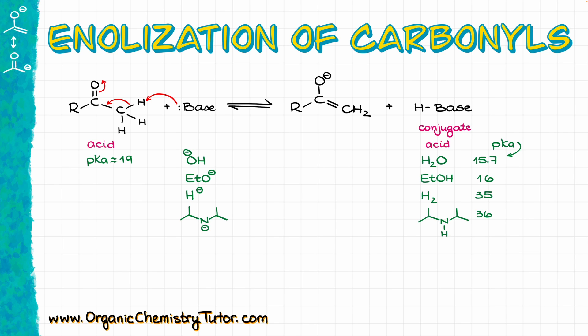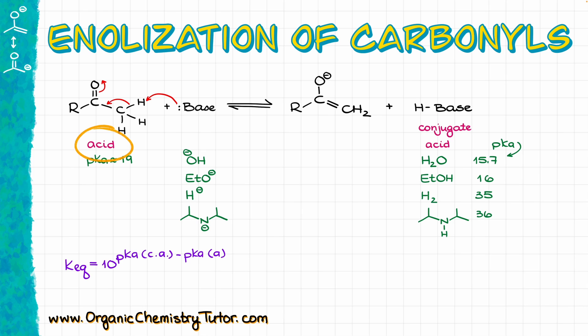That is extremely important because if we were to calculate the equilibrium constant of this acid-base reaction using our shortcut — where the equilibrium constant is going to be the pKa value of the conjugate acid minus the pKa of the actual acid, which is our ketone — we are going to be able to estimate the equilibrium constant. And if I do my calculations here, we can see that we get numbers from 10 to the negative power to 10 to the very large positive power.